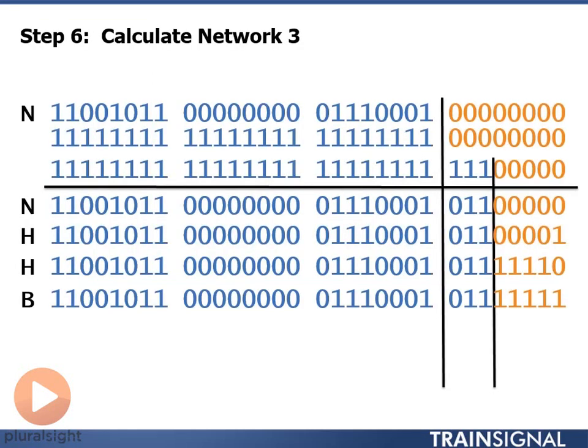So if we look at network 3 in binary here, this is how the computer looks at it. So when we look at it like this, it should make sense that we're following the rules here of network address, broadcast address, first and last host.